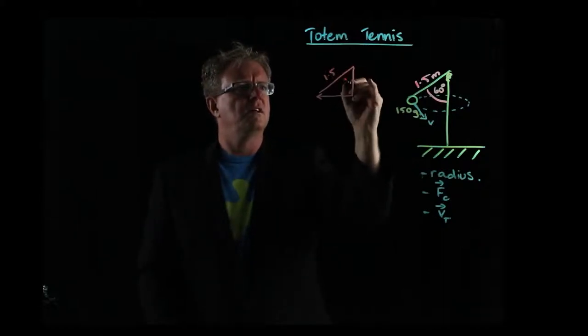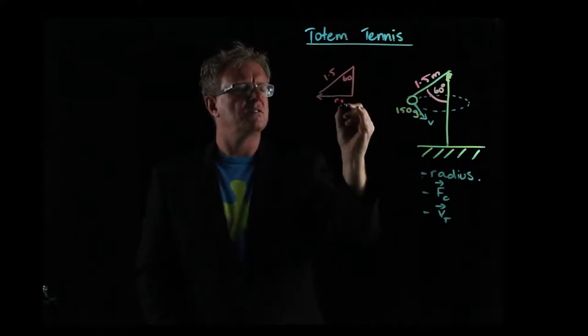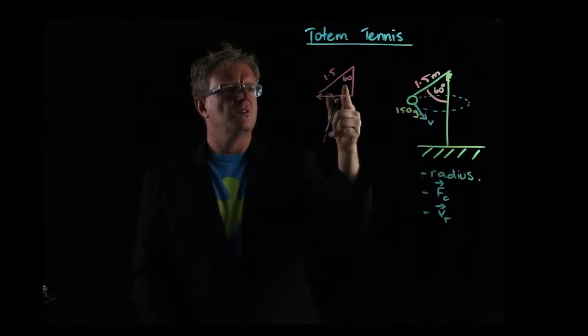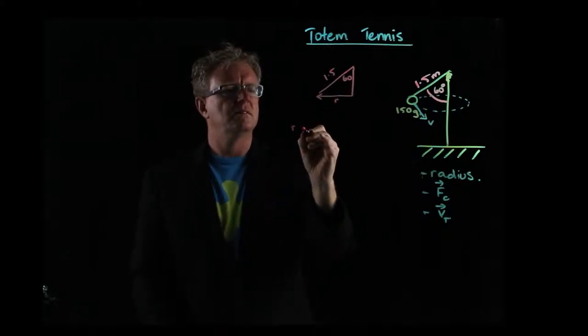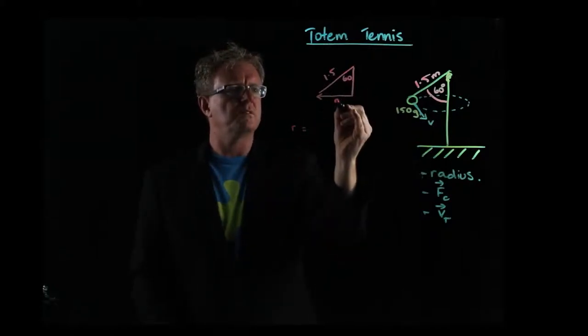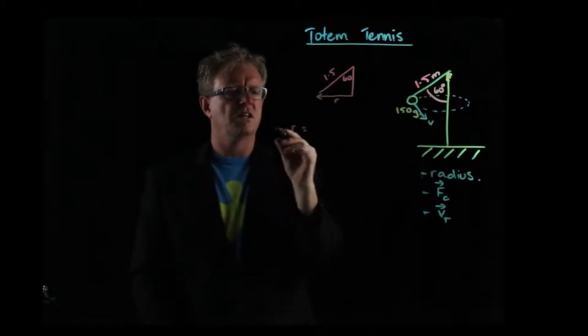And we have our ball right at the end here. This is 1.5. That's 60. And this is the radius. So we have r is equal to opposite there and hypotenuse.